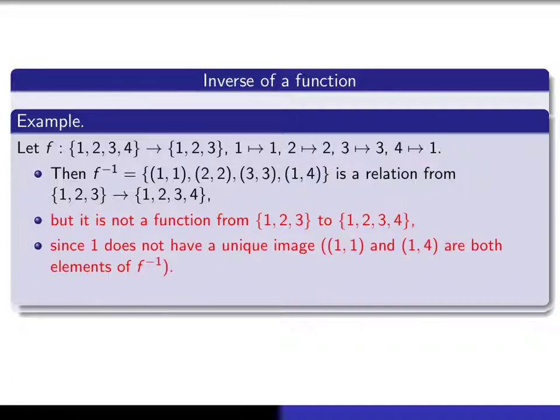The problem is that the image of 1 is, on the one hand, 1 here, but it's also 4 here. So it's not the case that 1 has a unique image, and therefore it's not a function. The fancy way of expressing the problem is to say that f is not one-to-one.